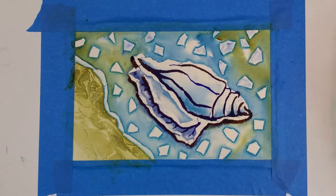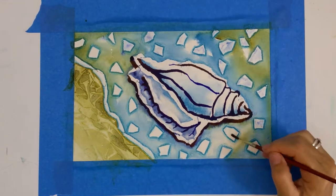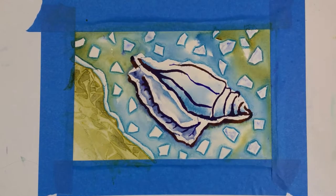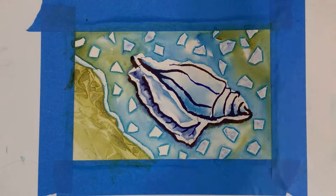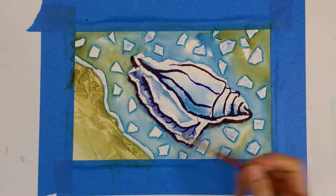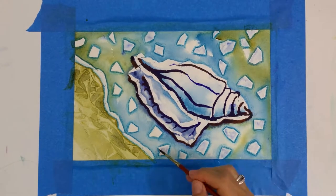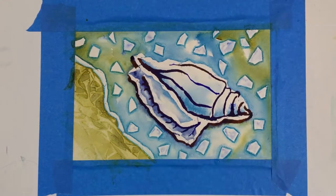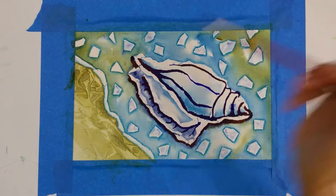So I consider the background the wash and the middle ground these shapes and the foreground is the shell. So it just kind of puts those back a little bit so the shell hopefully pops even a little bit more, even though it already does pop quite a bit because of those super dark ink lines.